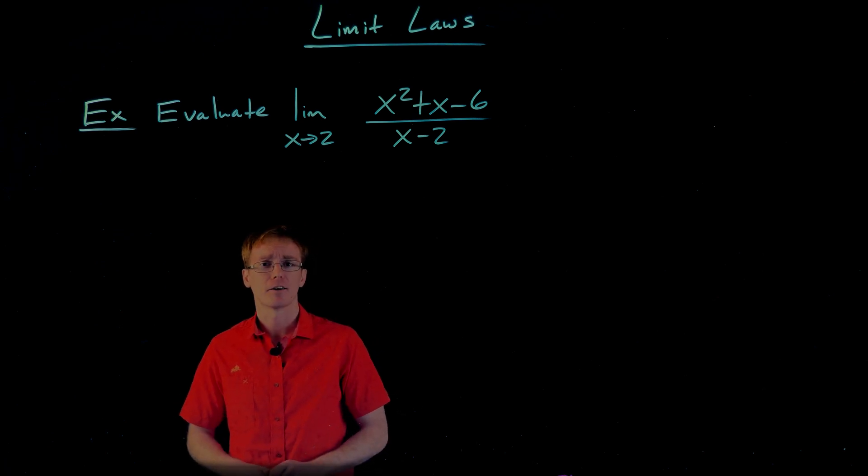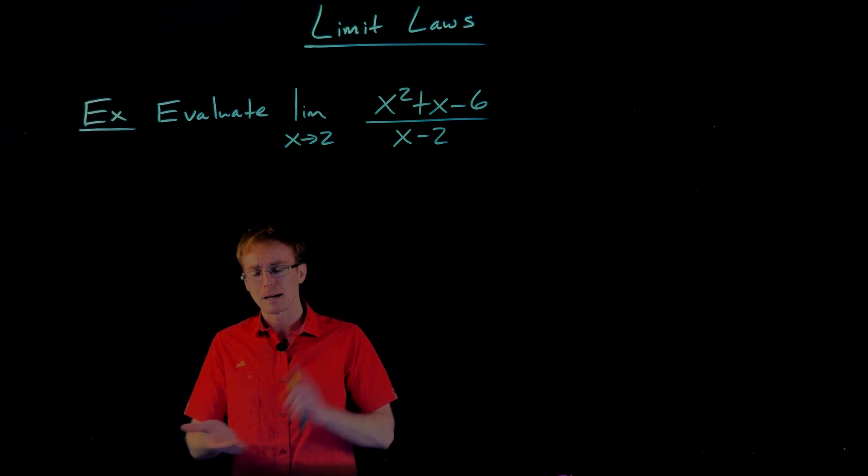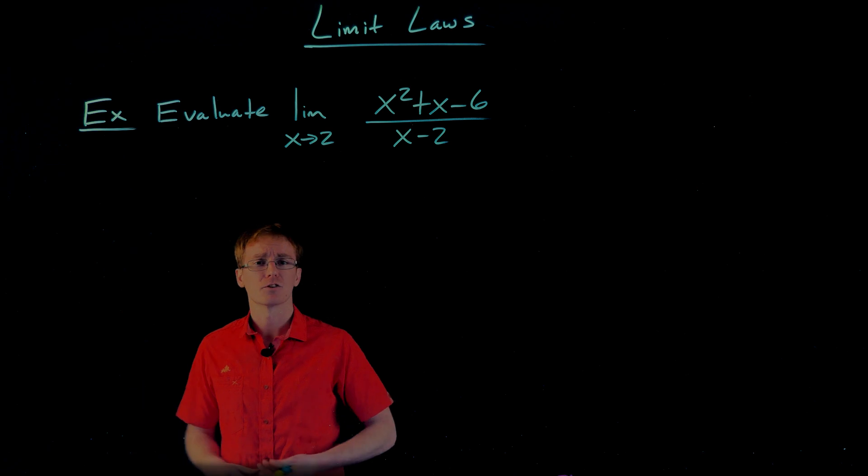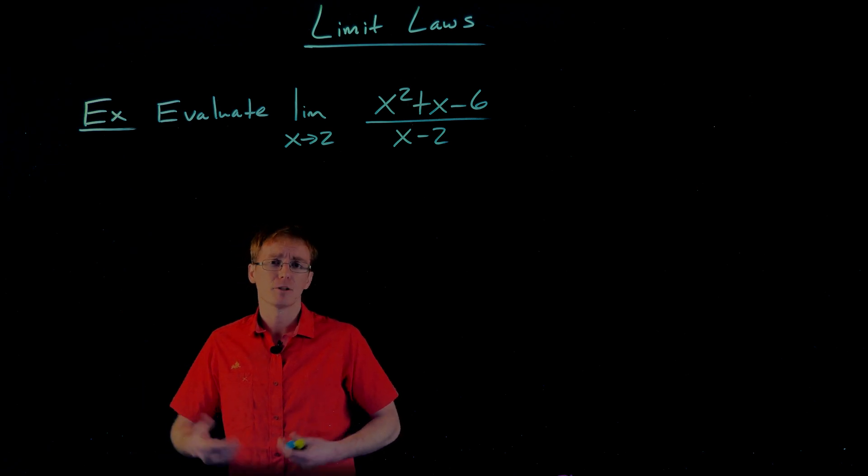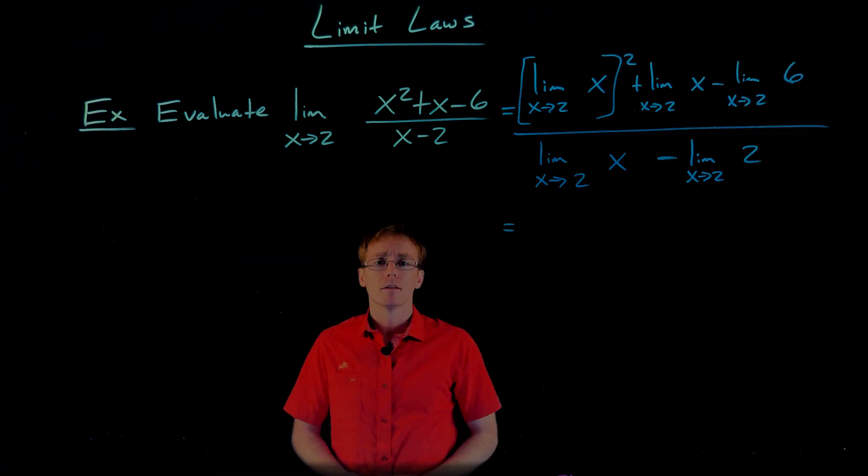So we're looking at evaluating the limit as x approaches 2 of the rational function, x squared plus x minus 6 divided by x minus 2. And so in the last video, we talked about, I mentioned, I referred to it as a direct substitution property, where as long as we have functions that involve powers of x and constants, we can always break it down using those 7 limit laws, and really evaluate it just by plugging our x value in. So let's go ahead and try that in this example.